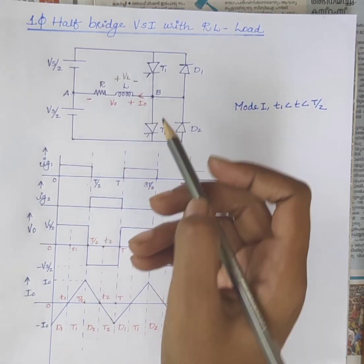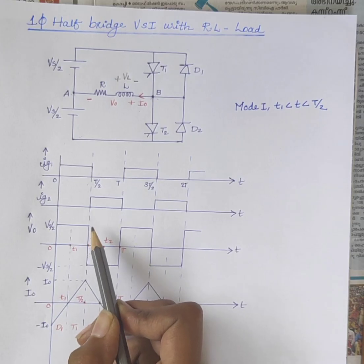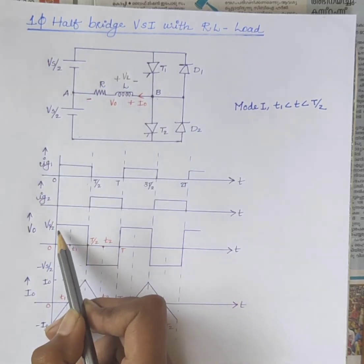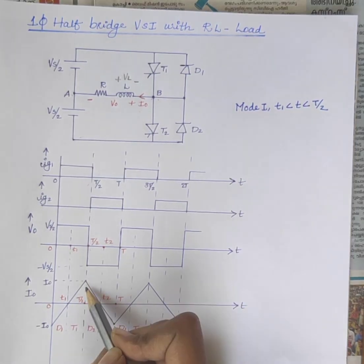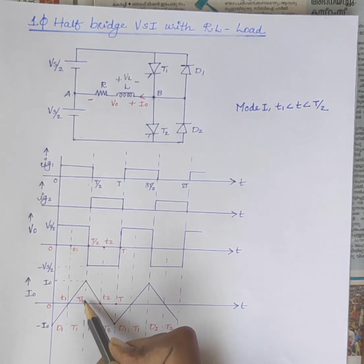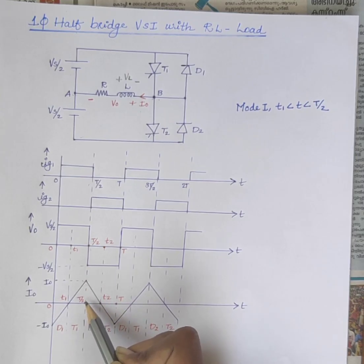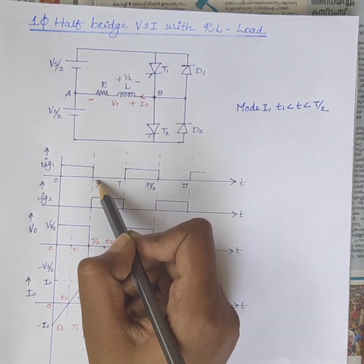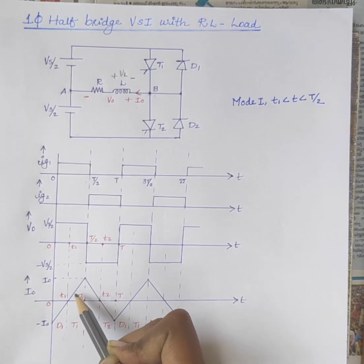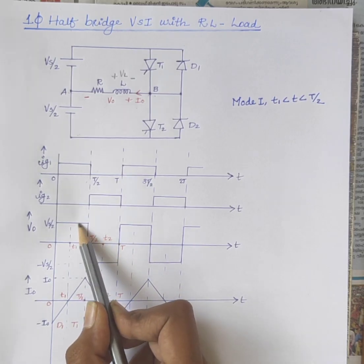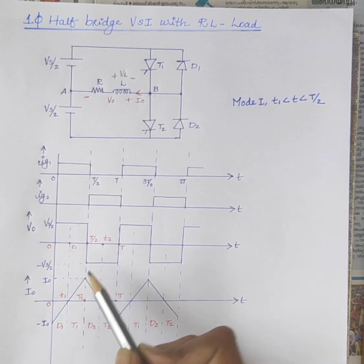During the interval T1 to T/2, the output voltage is positive and equal to Vs/2, and the output current increases gradually. At instant T/2, the load current reaches its peak value and thyristor T1 is turned off. Due to the same polarity of output voltage and output current, energy is stored by the load.